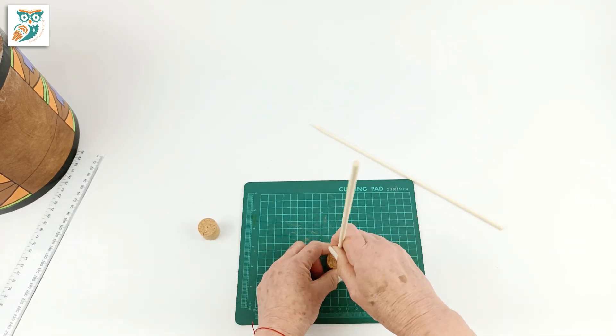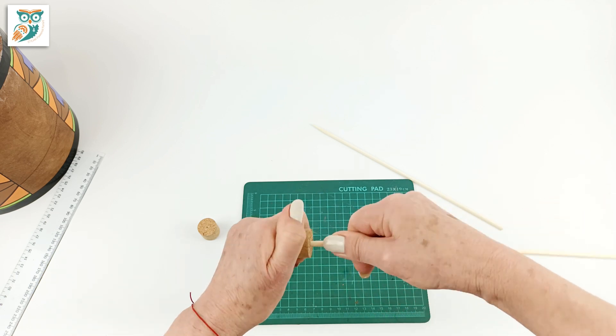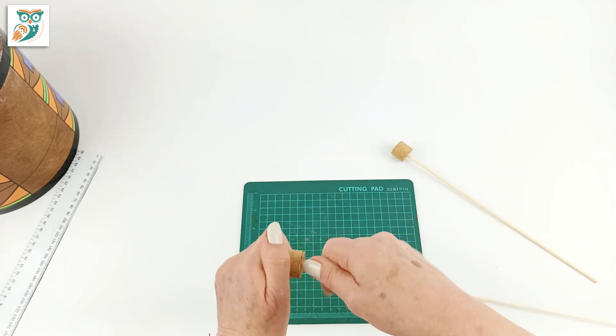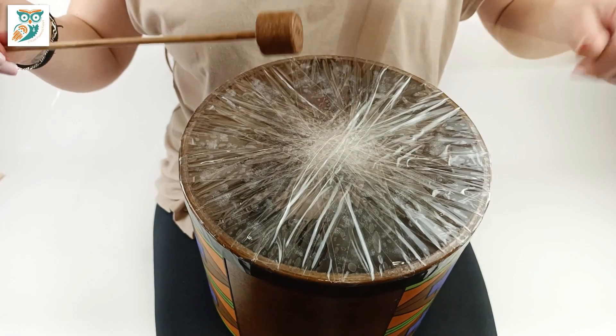Now we're marking the middle of the cork halves, and then we're going to push a skewer into each cork piece. This requires a little bit of muscle. There we go! Now you can paint those drumsticks if you want, and we're ready to play.